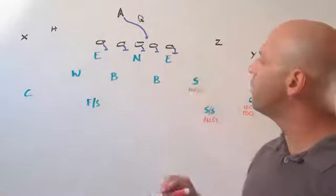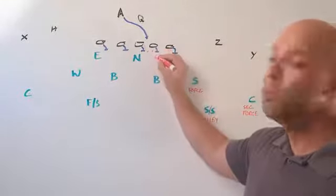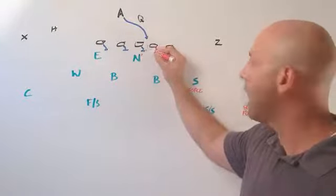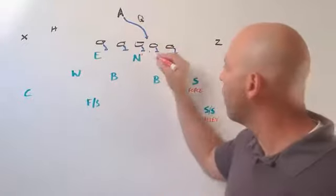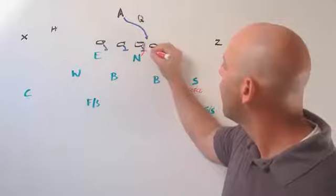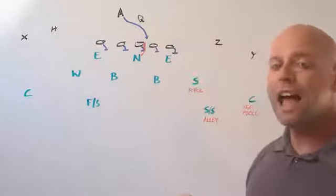So for our defensive linemen up front, when they see the zone block to the right, that tells the nose guard that he's responsible now for this A gap to the right. But not just anywhere in it, he's responsible for the inside half. So he wants to fit and control the inside half of the gap.